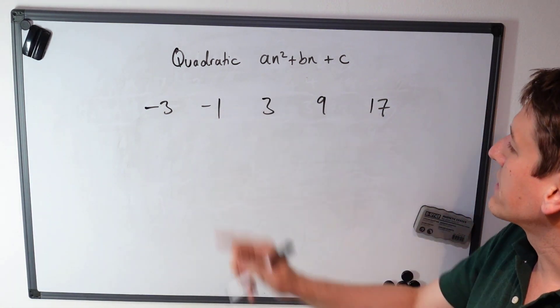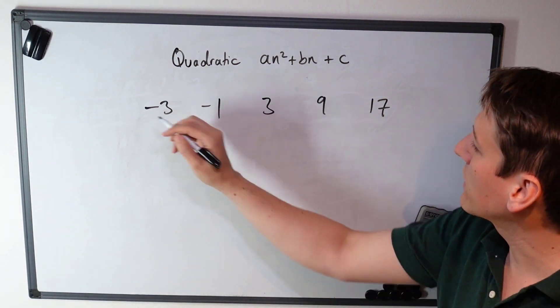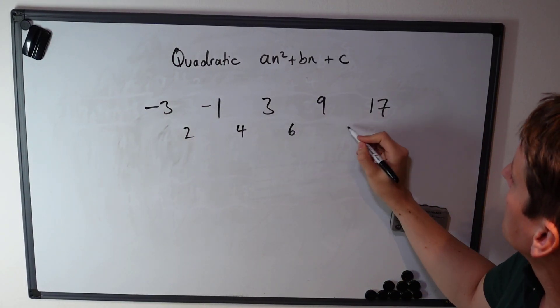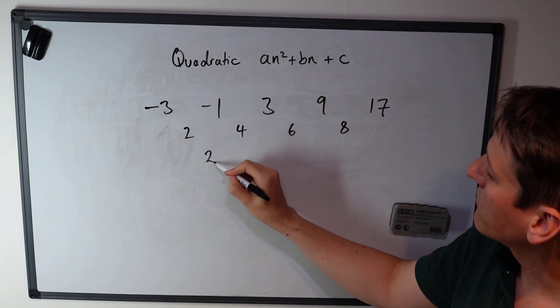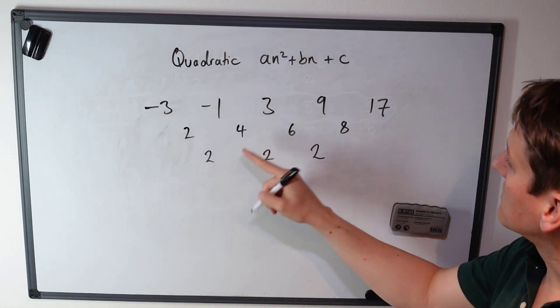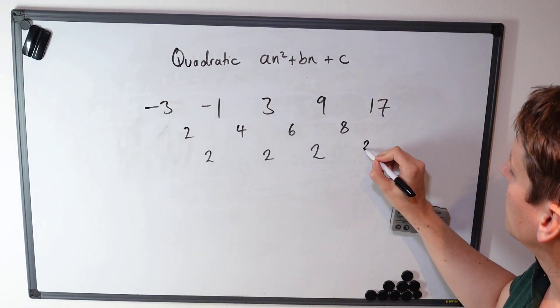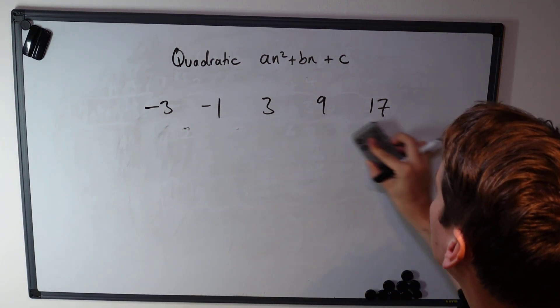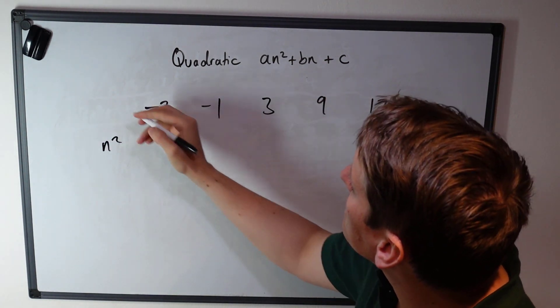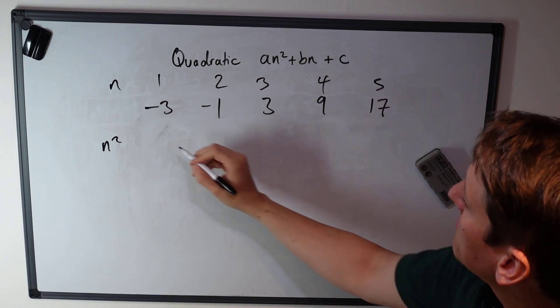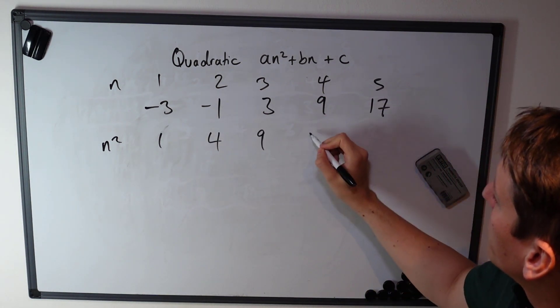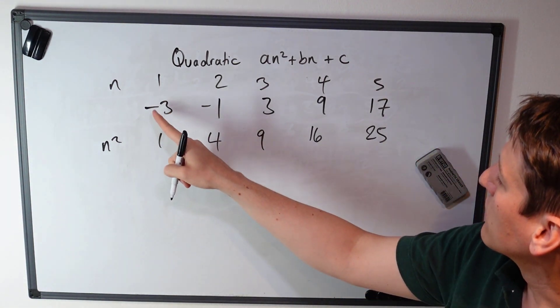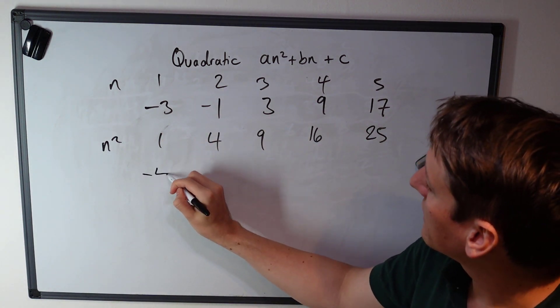Let's do another example: -3, -1, 3, 9, 17. When I take the first differences here, I'm adding 2, then plus 4, this is plus 6, this is plus 8. Then when I look at the second differences, I just get 2, 2, 2. So that means the a coefficient is 2 divided by 2, which is 1. When I'm looking at this sequence, it's going to be related to the sequence n². I can just write down my term numbers and the squares: 1, 4, 9, 16, 25.